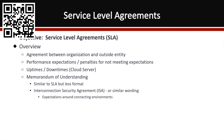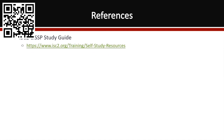Memorandums of understanding are similar to SLAs but less formal — more of a gentlemen's agreement on getting things done. They don't carry the same legal weight as an SLA but do set expectations when working with third parties. An interconnection security agreement (ISA) is similar in wording to a memorandum of understanding and sets expectations around connecting various environments. For more information, refer to the ISC Squared training manual.